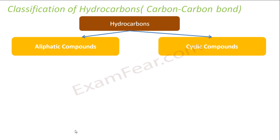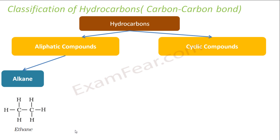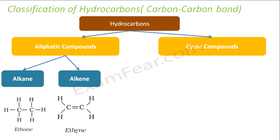Hydrocarbons are classified into two types based on the carbon-carbon bond. One is the aliphatic hydrocarbon and the second is the cyclic hydrocarbon. Aliphatic hydrocarbons have straight chains — they don't have a circular ring kind of structure. In aliphatic hydrocarbons we have alkanes, which have all single bonds between carbon-carbon, and then we have alkenes, where there is one double bond between carbon-carbon.